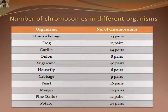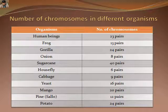The table presented below shows the total number of chromosomes found in each cell of an organism.